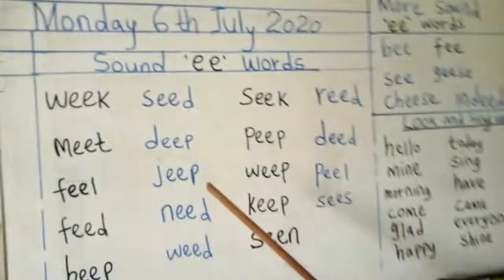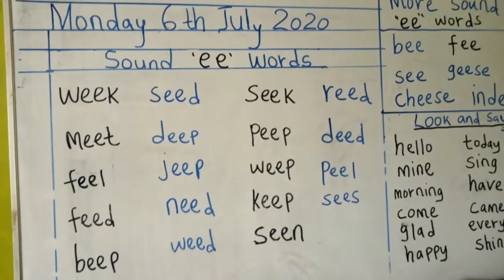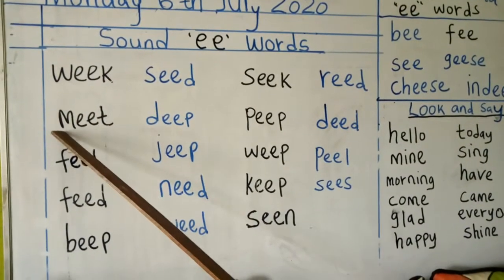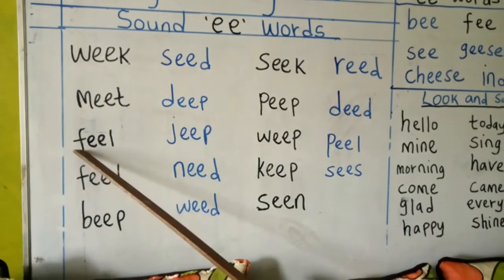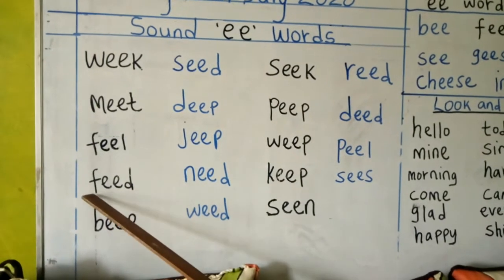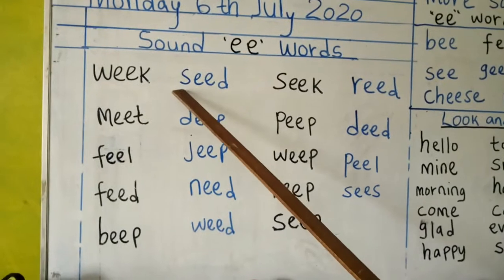This will help us read some words that have that sound 'ee'. Today we start our learning by looking at four-letter words with that double sound 'ee'. We look at the board. We have 'ee' sound words. Words like: week, meet, feel, feed, beep.